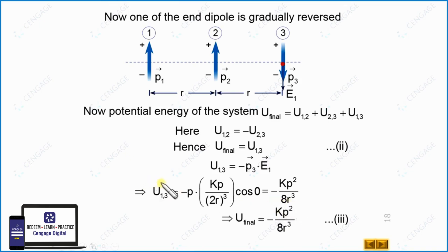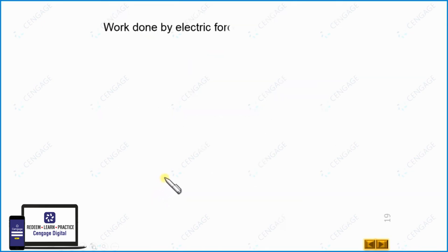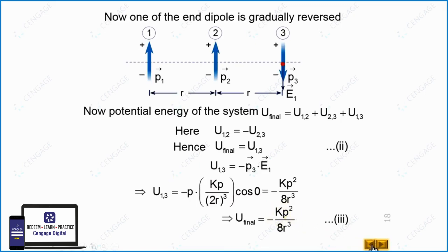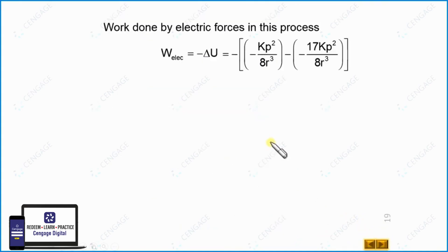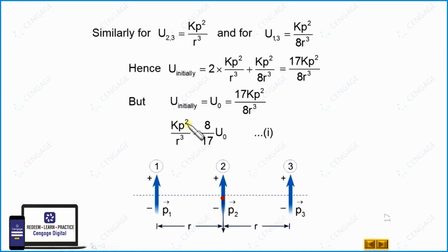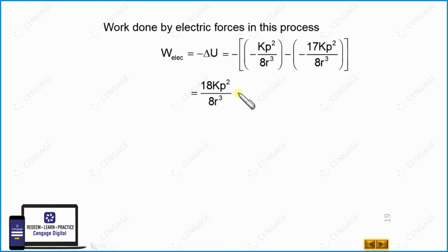The work done by the electric force equals minus the change in potential energy: W = −(U_final − U_initial). U_final = −KP²/8R³ and U_initial = 17KP²/8R³. The change is −18KP²/8R³, so W = 18KP²/8R³. Substituting KP²/R³ = 8U0/17, the 8s cancel, giving W = 18U0/17.